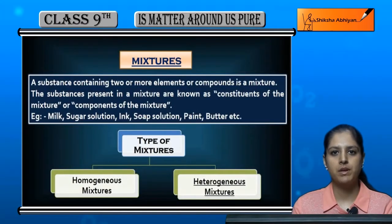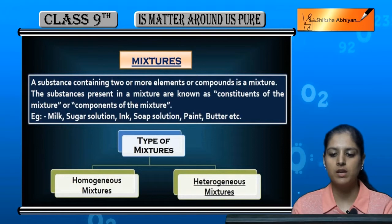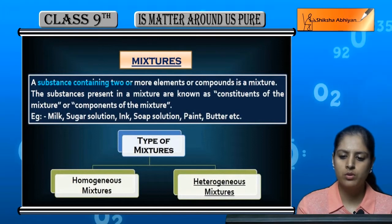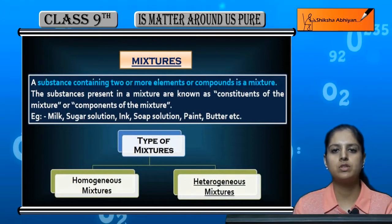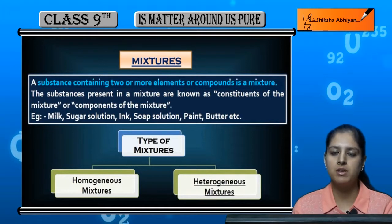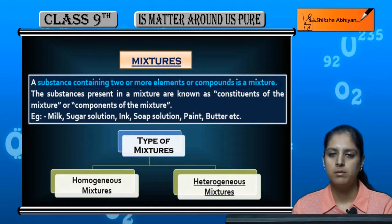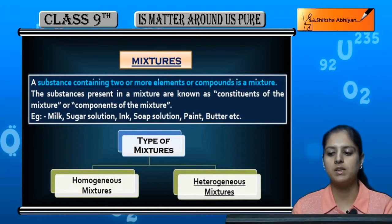The next topic is mixtures — a basic introduction. We have already seen how many types there are, so let us have a quick recap. A substance containing two or more elements or compounds is a mixture — a mixture in which two or more elements or compounds are mixed together.